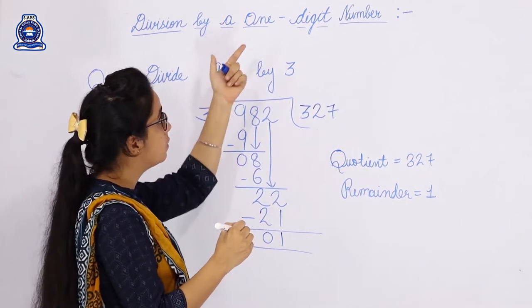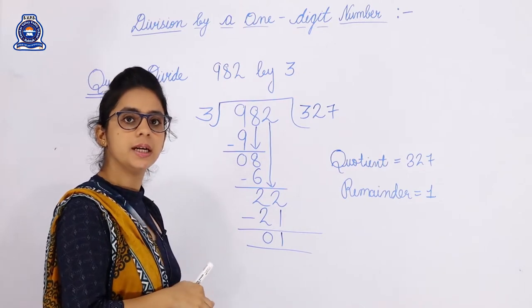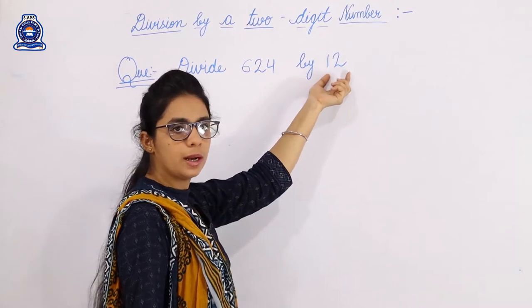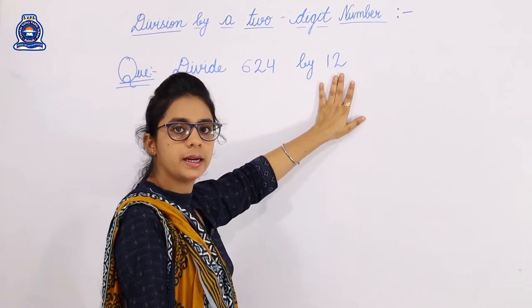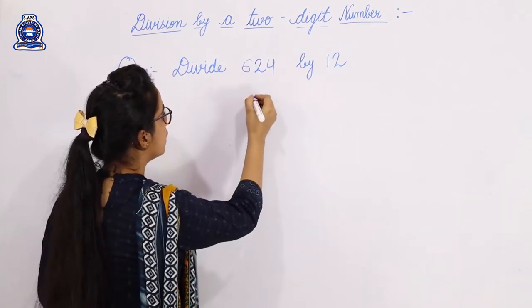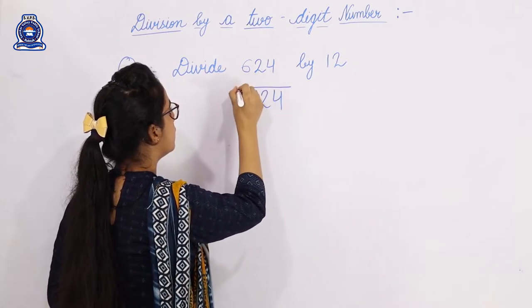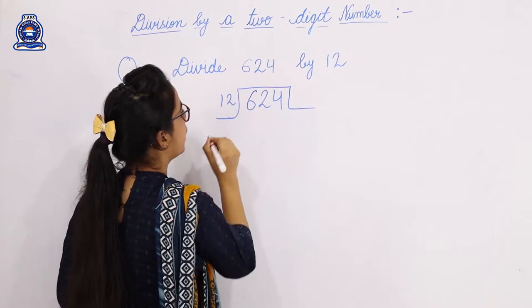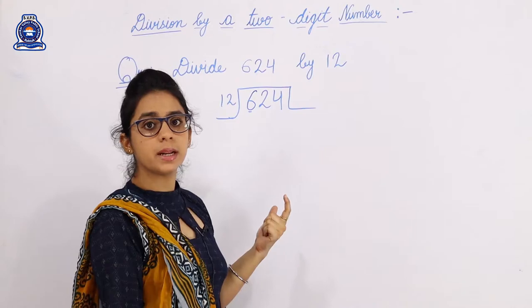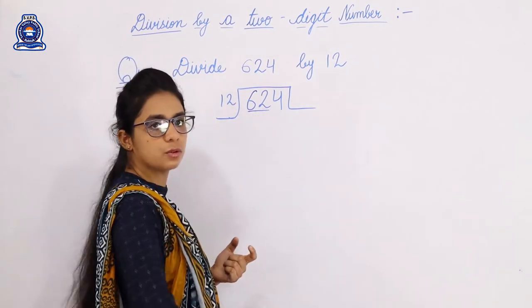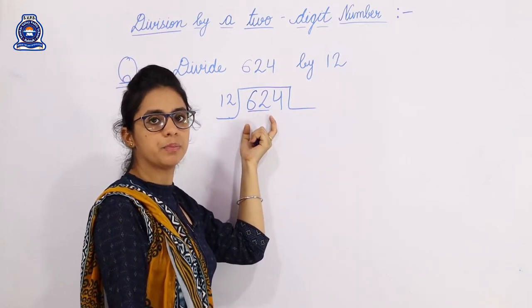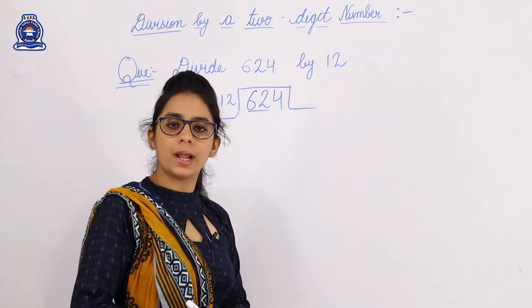I hope you understand this one-digit number division. Now we start division by two-digit numbers. Here dividend is 624 divided by 12. The divisor is 12, which is a two-digit number. The method remains the same.